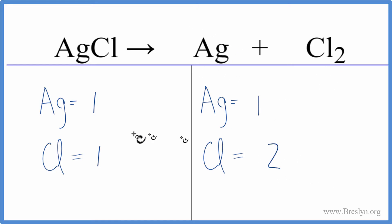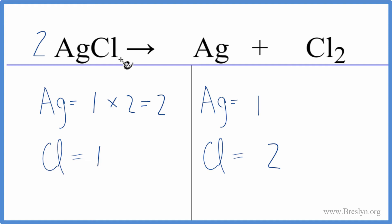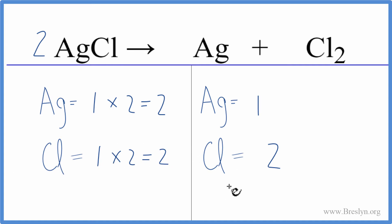So to balance the chlorines, we're going to change the coefficient in front of AgCl. Put a two here. This two applies to everything — one times two — so now we have two silver atoms and one times two gives us two chlorine atoms. We've balanced the chlorines.